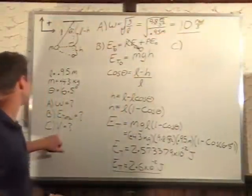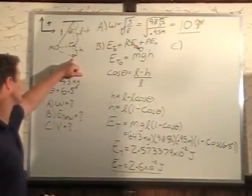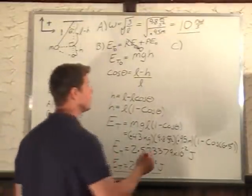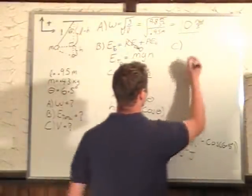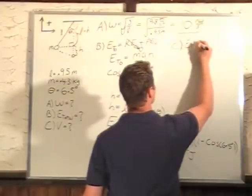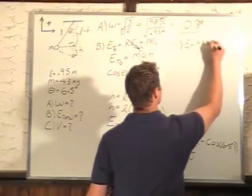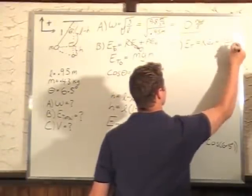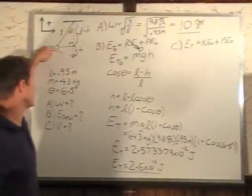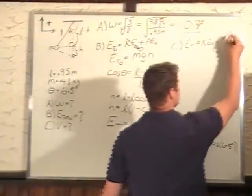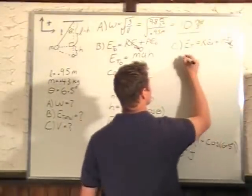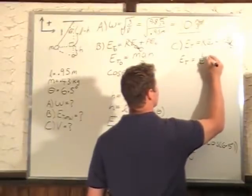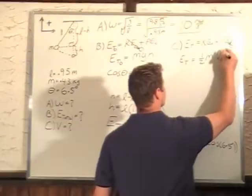We want to find the velocity of the ball at the bottom. We're going to do this using energy again. We now know the total energy. We have energy total equals kinetic energy final plus potential energy final. In this case, we have no potential energy because we're at our zero point, so our total energy is equal to kinetic energy final, which is just one-half mass times our final velocity squared.